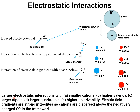In other words, larger electrostatic interactions are achieved with smaller cations because the center-to-center distance is smaller if the radius of the extra-framework cation is smaller. The electrostatic interactions also increase with the valency of the extra-framework cation — a bivalent barium cation would contribute to a greater extent to the electrostatic interactions. Larger dipole, larger quadrupole, and higher polarizability will all lead to larger magnitudes of electrostatic potentials.